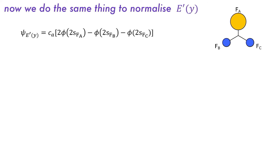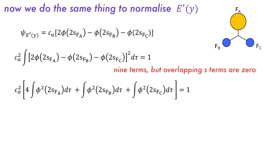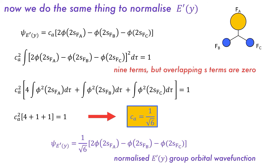Next, we look at E prime Y. In the molecular orbital wave function, the contribution of F-A is twice that of F-B or F-C, and F-B and F-C have a different phase from F-A. The coefficient is then determined using the normalization requirement, and again we only have 3 terms because the only overlaps are between atomic orbitals and themselves. This gives C_A squared times 4 plus 1 plus 1 equal to 1, which simplifies to give C_A equal to 1 over the square root of 6, giving us the normalized wave function for E prime Y.